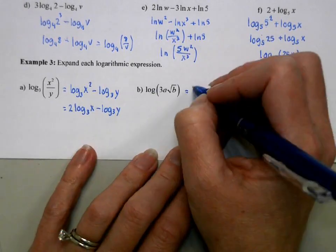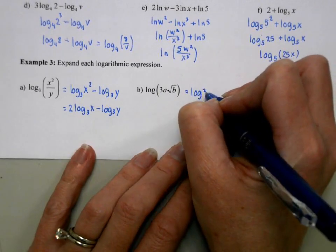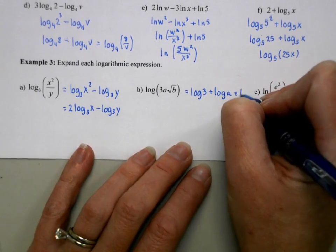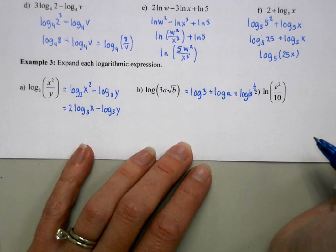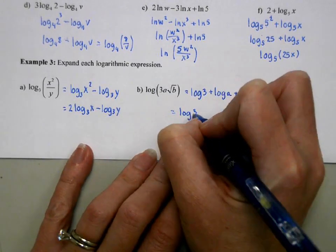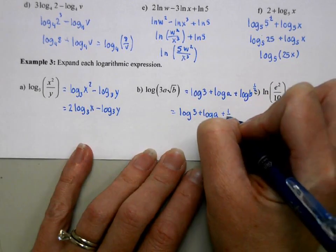I've got three things I'm multiplying. So I'm going to have log 3 plus log a plus log b. And I'm going to change that square root to a 1 half power. And then bring that power down.